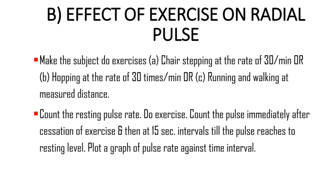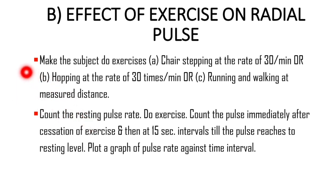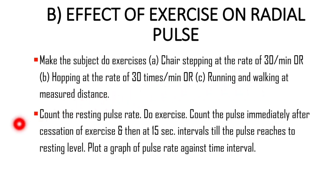Now we are going to find the effect of exercise on radial pulse. Before asking the subject to do exercise, count the resting pulse rate of the subject. Then ask the subject to perform exercise using any of the following three methods: first, chair stepping at the rate of 35 per minute; second, hopping at the rate of 30 times per minute; third, running and walking at a measured distance. Immediately after the completion of exercise, count the pulse for 15 seconds. At the end of the 15th second, note down the rate.